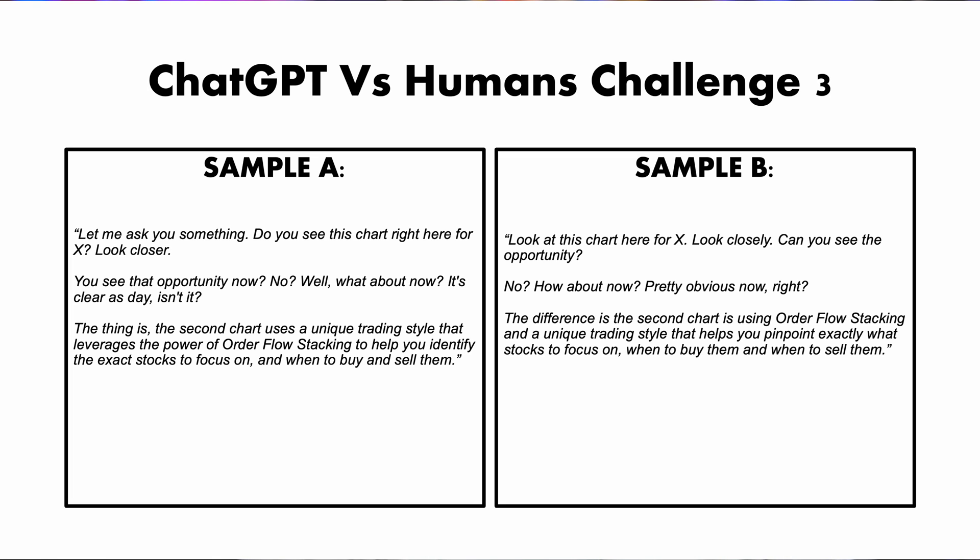Sample B: Look at this chart here for X. Look closely. Can you see the opportunity? No? How about now? It's pretty obvious now, right? The difference is the second chart is using order flow stacking and a unique trading style that helps you pinpoint exactly what stocks to focus on, when to buy them and when to sell them. Take some time to decide and then I'm going to reveal the answer to sample three.